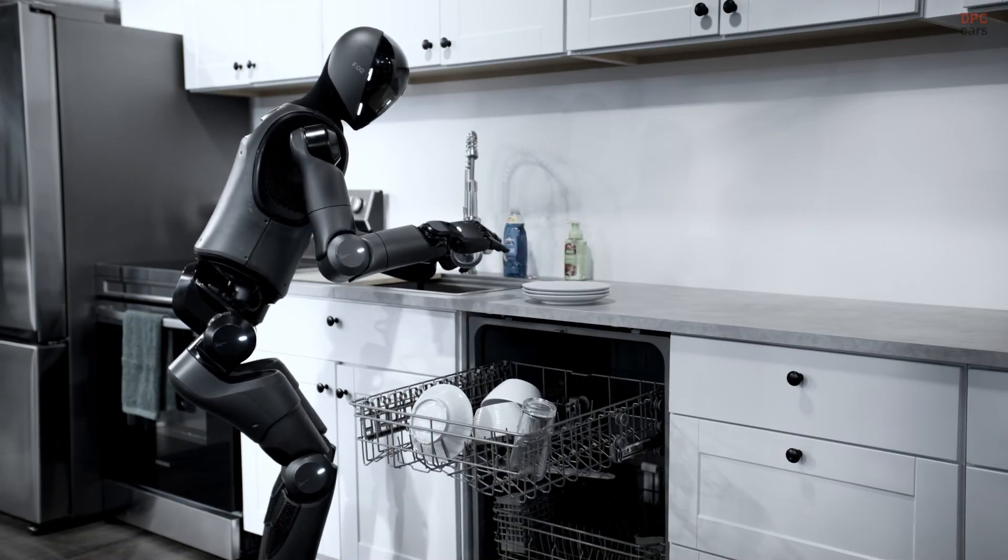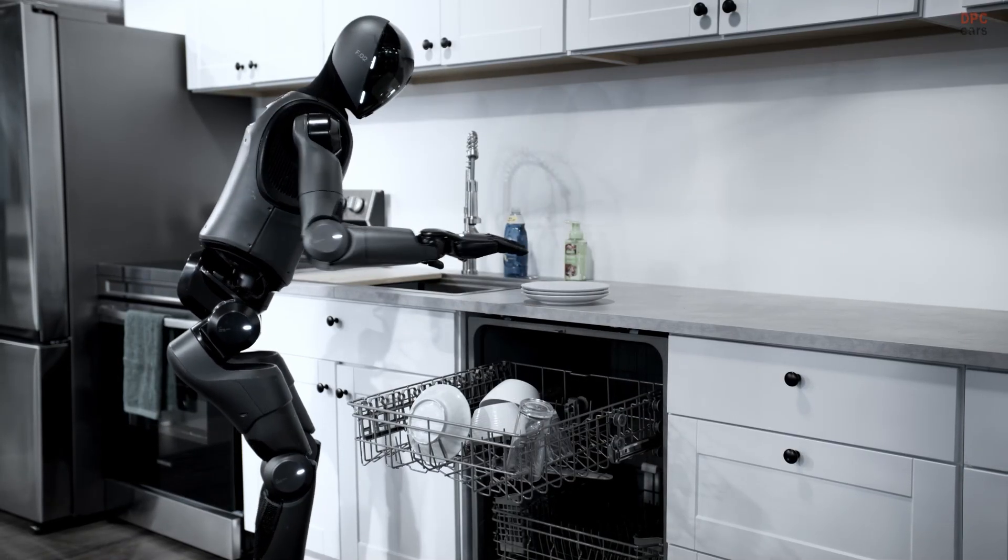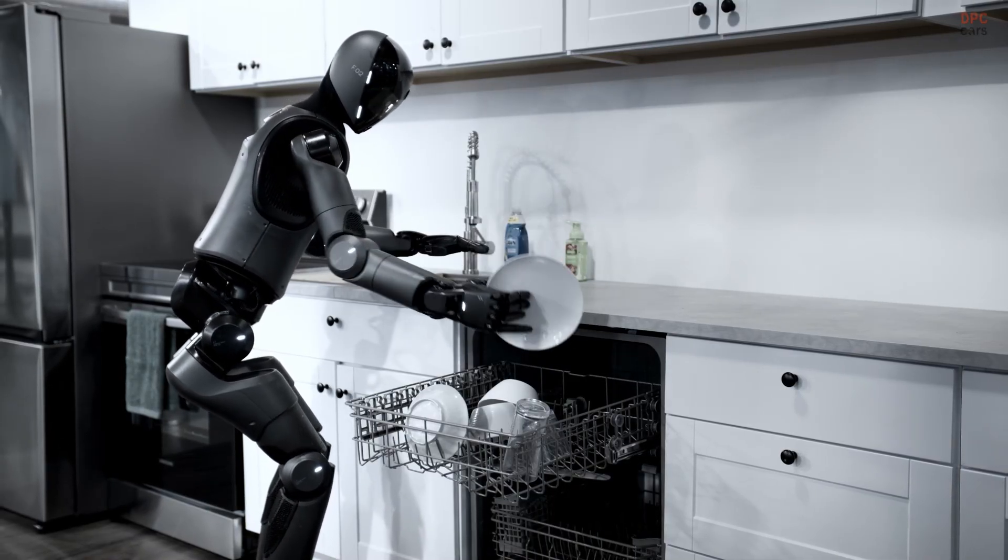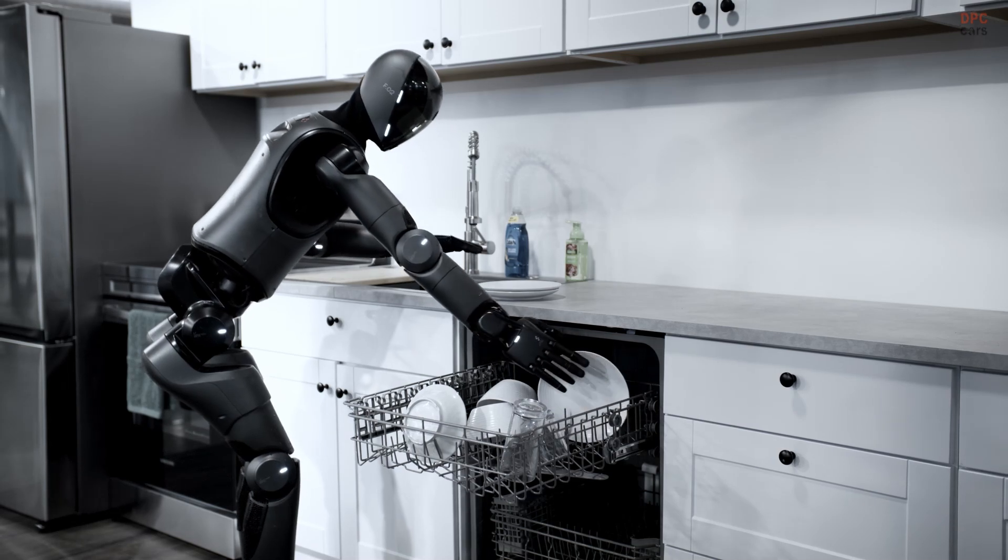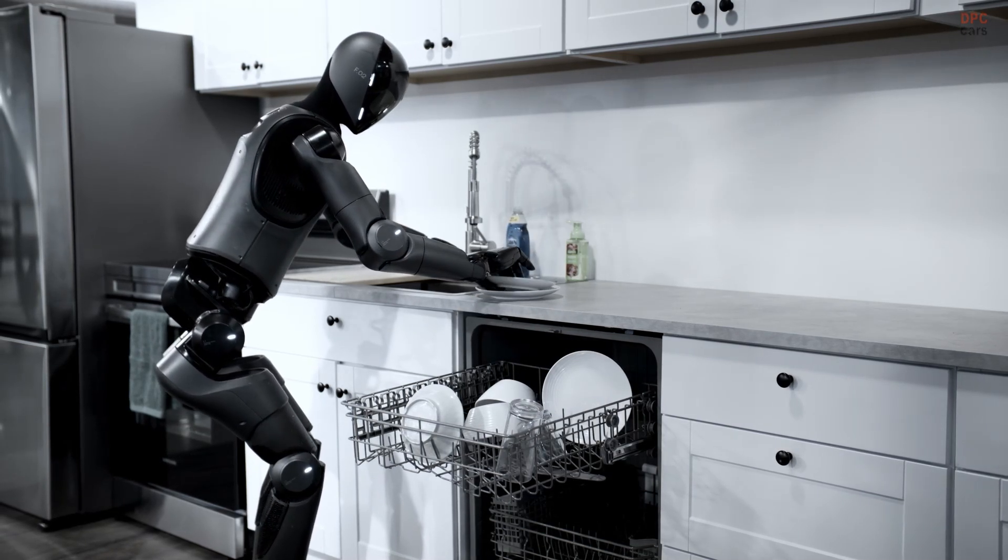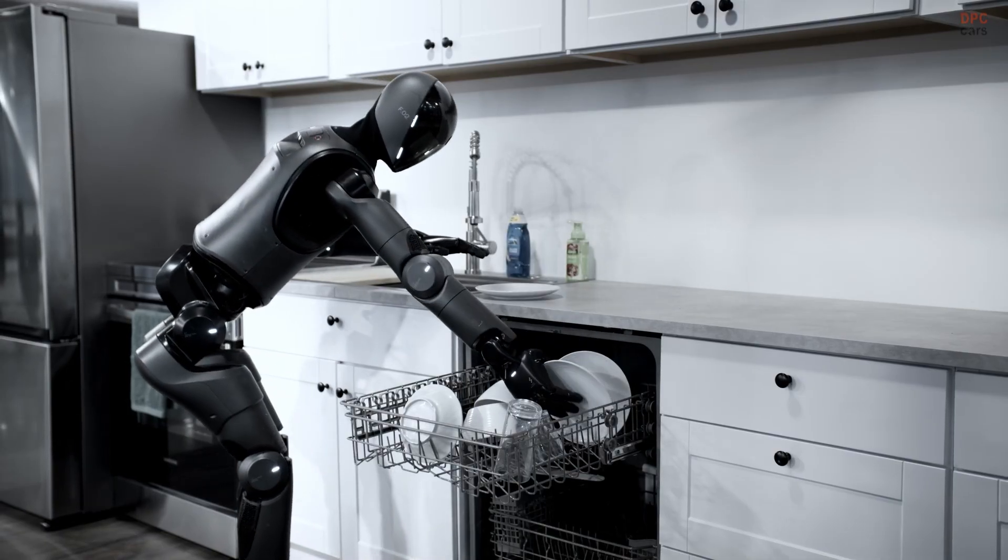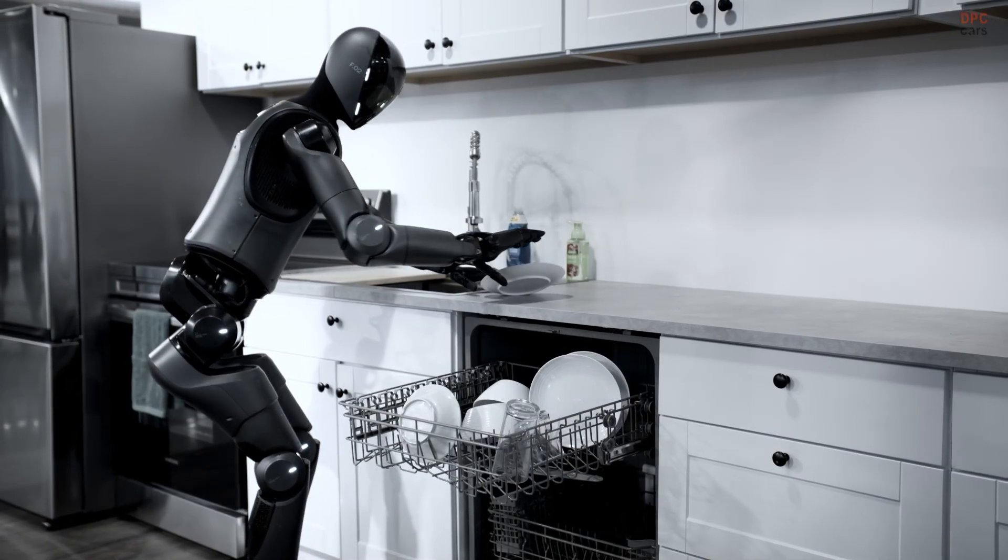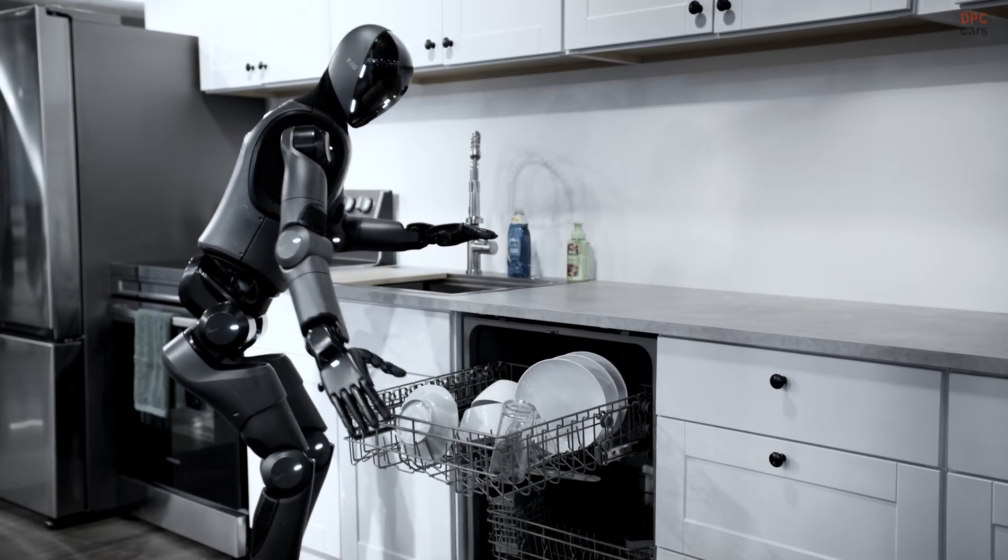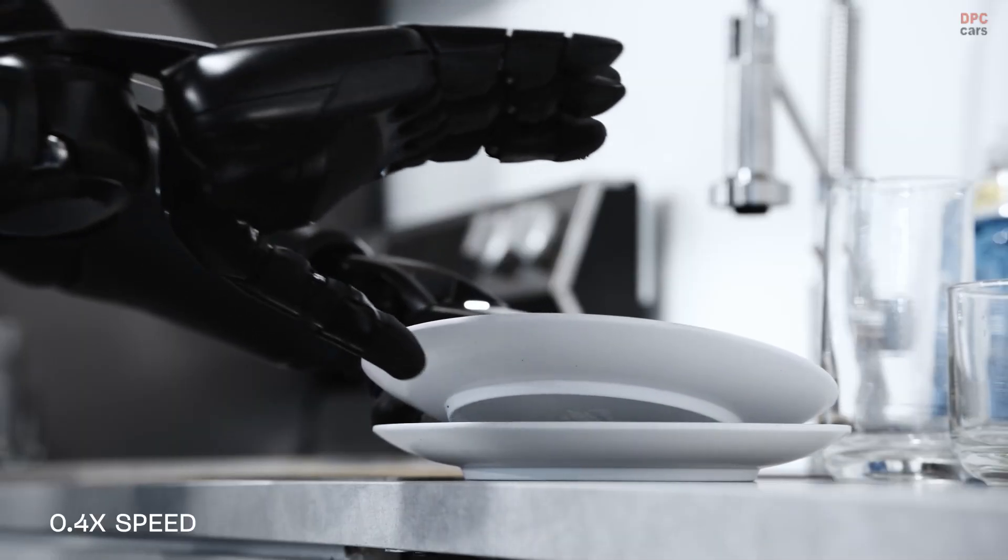Watch the hands first. Plates are read like little maps—edges, weight, and wobble. A gentle pinch, a slight wrist roll, and the plate slides into the rack without clatter. Cups follow with a tilt that avoids the prongs. Cutlery gets sorted, not stacked. The robot checks spacing twice before closing the lower tray because empty spaces matter when water has to flow.